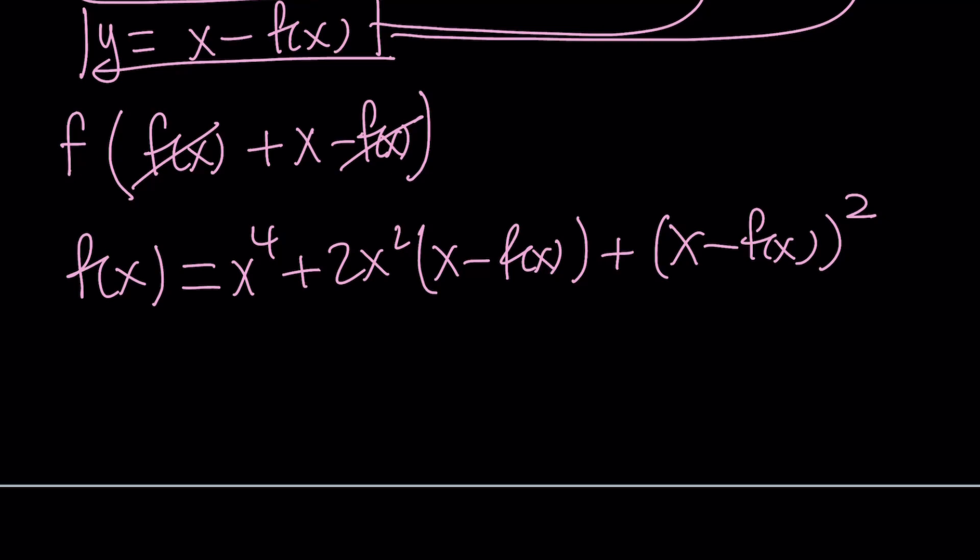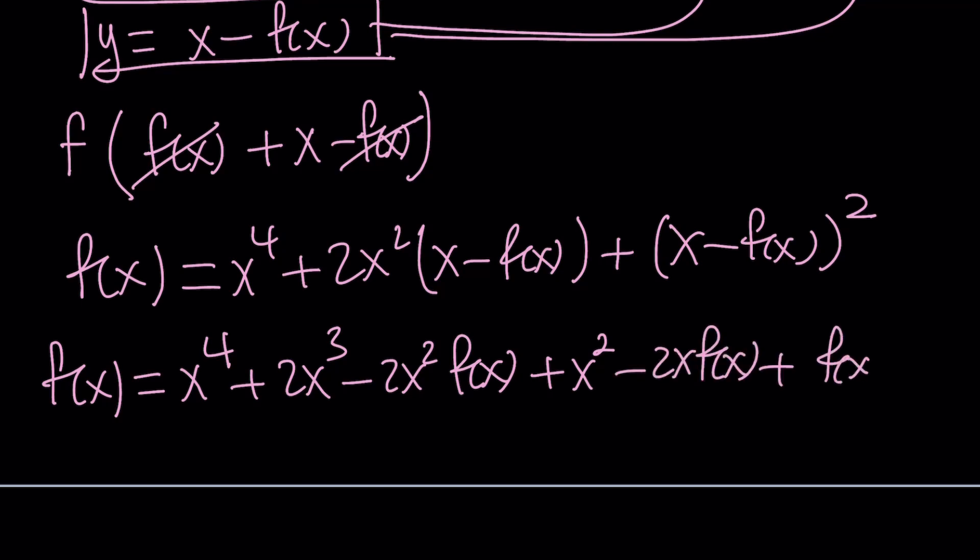Then we're going to make it messier, and then we're going to fix it. Let's go ahead and expand everything on the right-hand side. x to the fourth plus 2x cubed minus 2x squared f of x, and then we have a minus b quantity squared. Let's go ahead and expand it: x squared minus 2x f of x plus f of x squared.